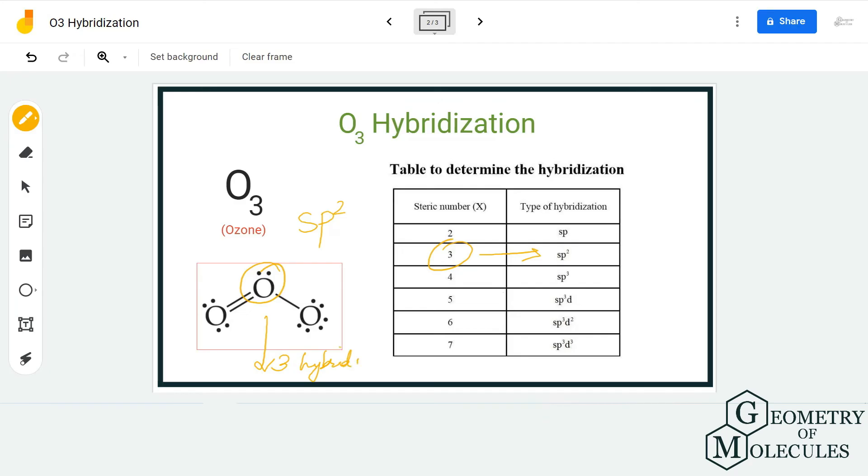This means that the central oxygen atom needs to have three hybrid orbitals in order to accommodate all the bonding and non-bonding pairs of electrons. That holds true because there are two sigma bonds and one lone pair. Hence, the hybridization for O3 molecule is sp2.